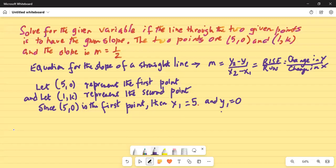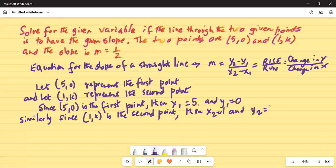Similarly, since (1, k) is the second point, then x2 is equal to 1 and the y coordinate of the second ordered pair, y2, is equal to k.